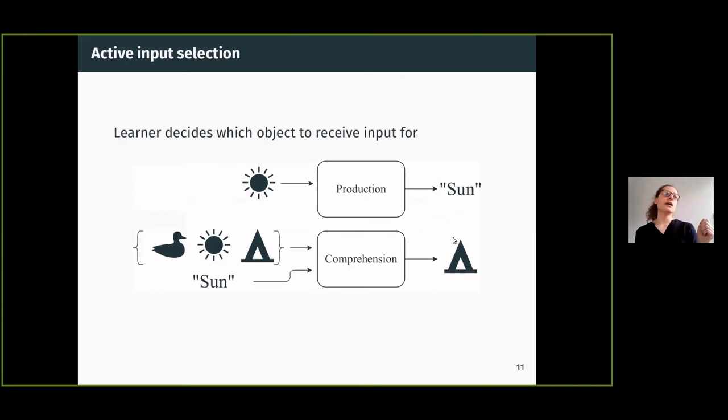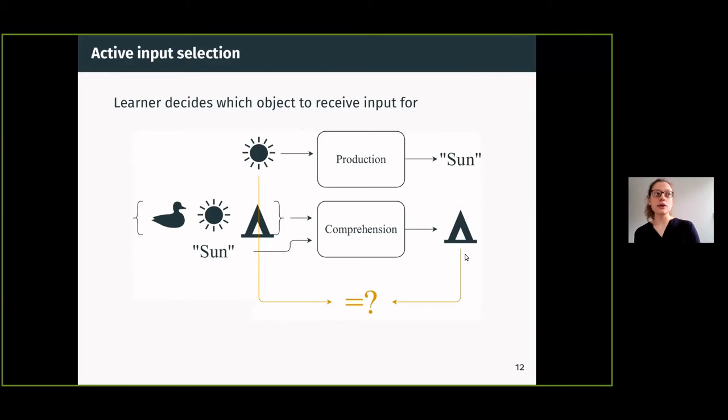For every object in the scene, we input the objects to the production module which outputs the label. Then we feed this label together with all of the objects in the scene through to the comprehension module, which outputs an object again, and we can see whether this matches or not.